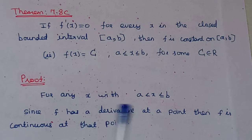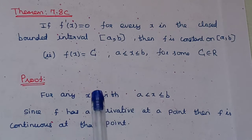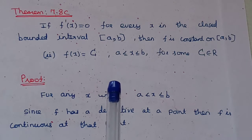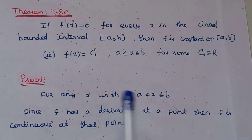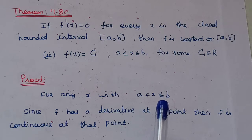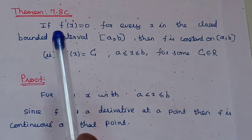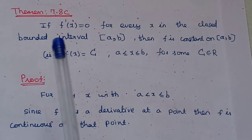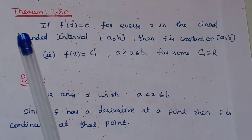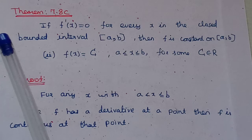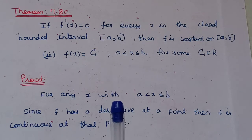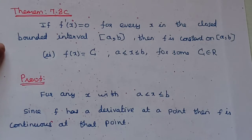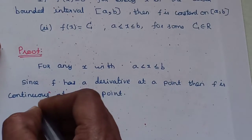If f'(x) is equal to 0, then by the mean value theorem that holds for every x with a less than or equal to x less than or equal to b. If f'(x) is equal to 0, then the derivative exists. If a function is differentiable at a point, it implies the function is continuous at that point. Since f has a derivative at a point, then f is continuous at that point.